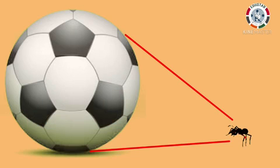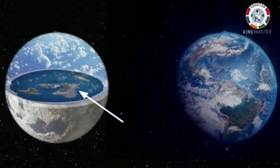What would the football look like if the ant saw it from a distance? Yes, the football will be round. Similarly, we occupy a tiny space on the Earth, so the part of the Earth's surface that we are able to see appears flat to us.